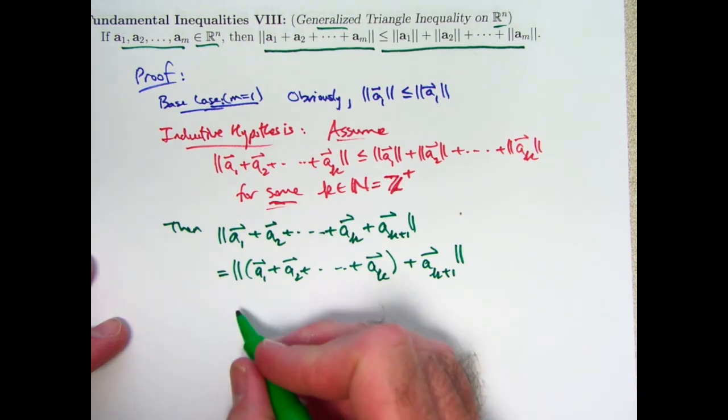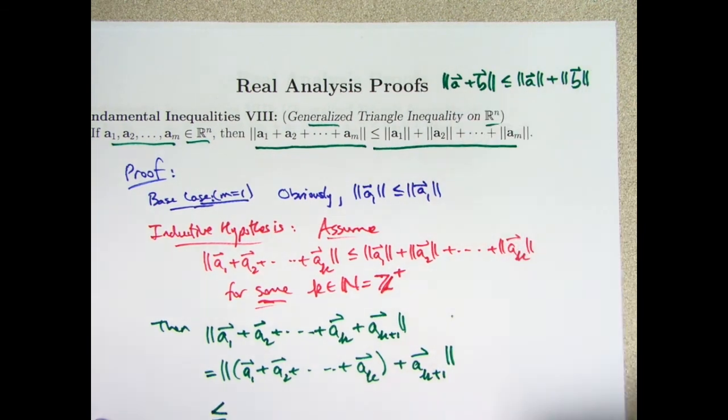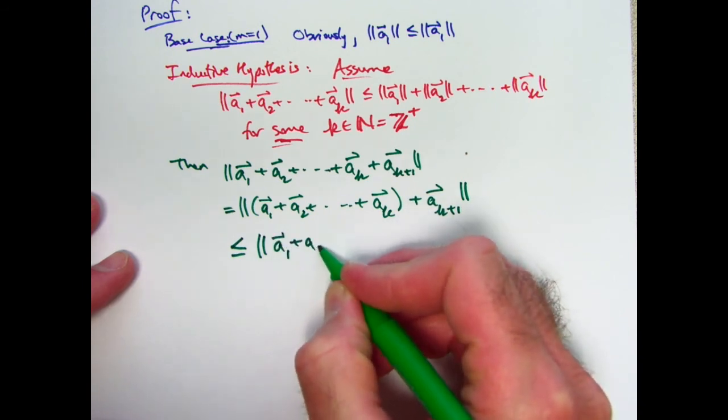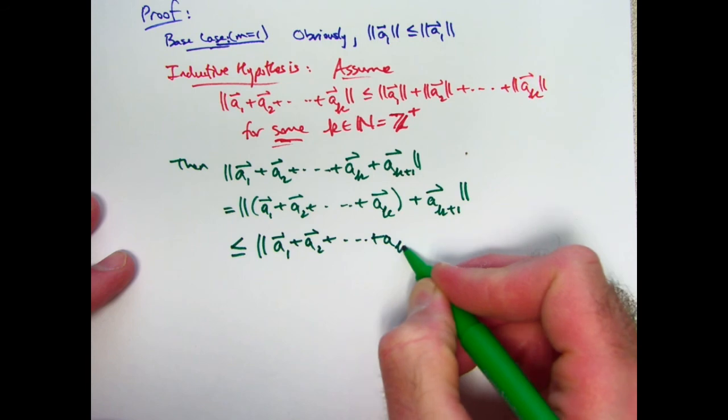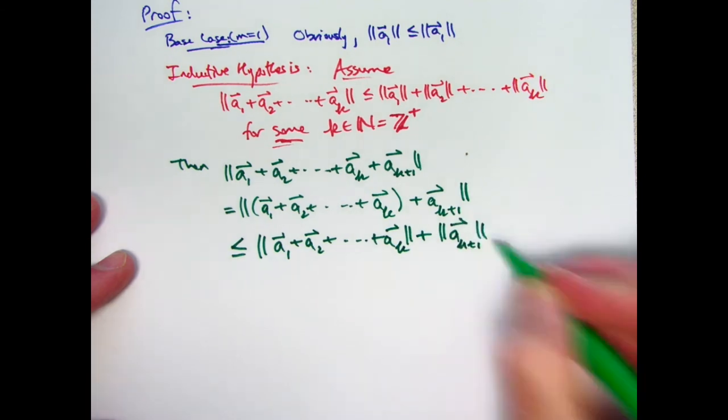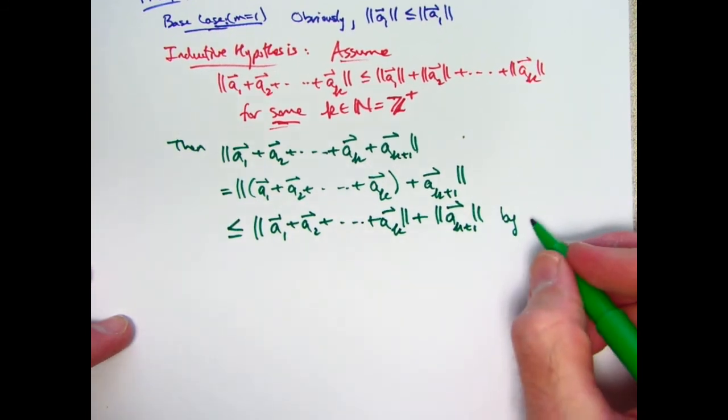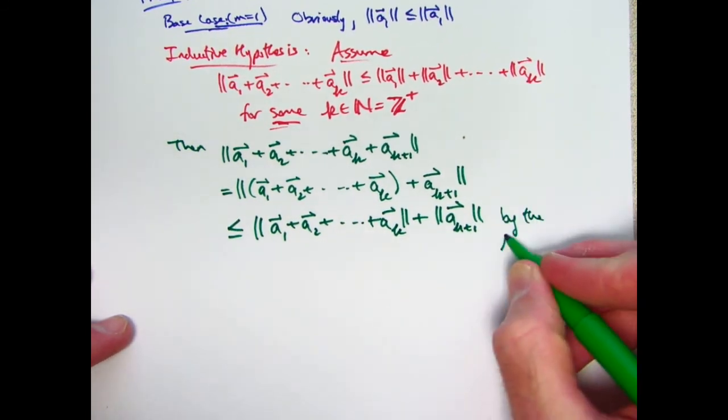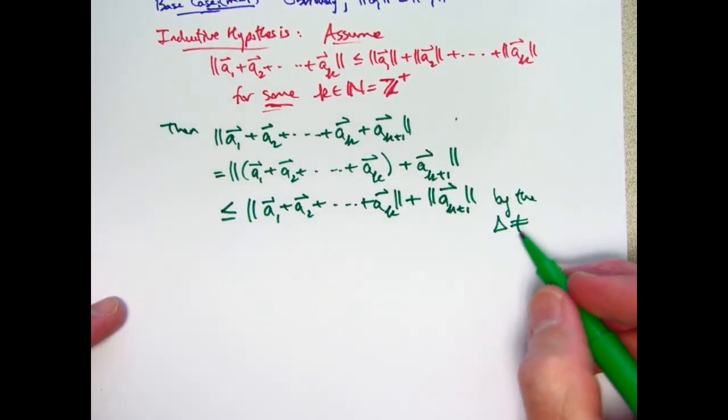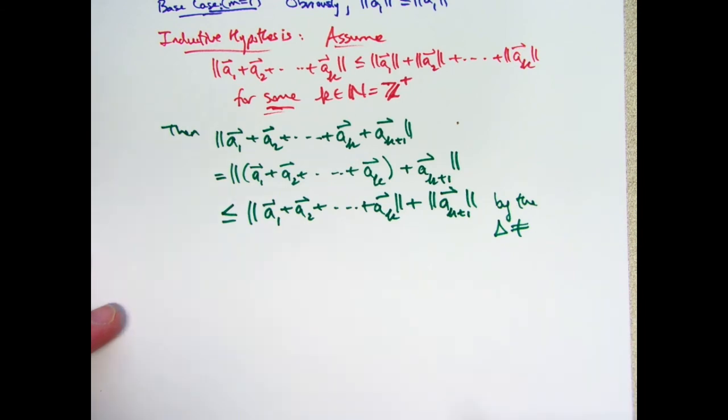I can now therefore use the ordinary triangle inequality, that form of it right there, where I have two vectors that are being added, to say that this is less than or equal to the magnitude of a₁ plus a₂ plus dot dot dot plus aₖ, plus the magnitude of aₖ₊₁, okay? That's by the ordinary triangle inequality, which I like to abbreviate like this. Be careful, that's not a delta, okay? It's a triangle, and in the triangle inequality, it's always a less than or equal to, but when I abbreviate it, I put a not equal to. That's by the ordinary triangle inequality.